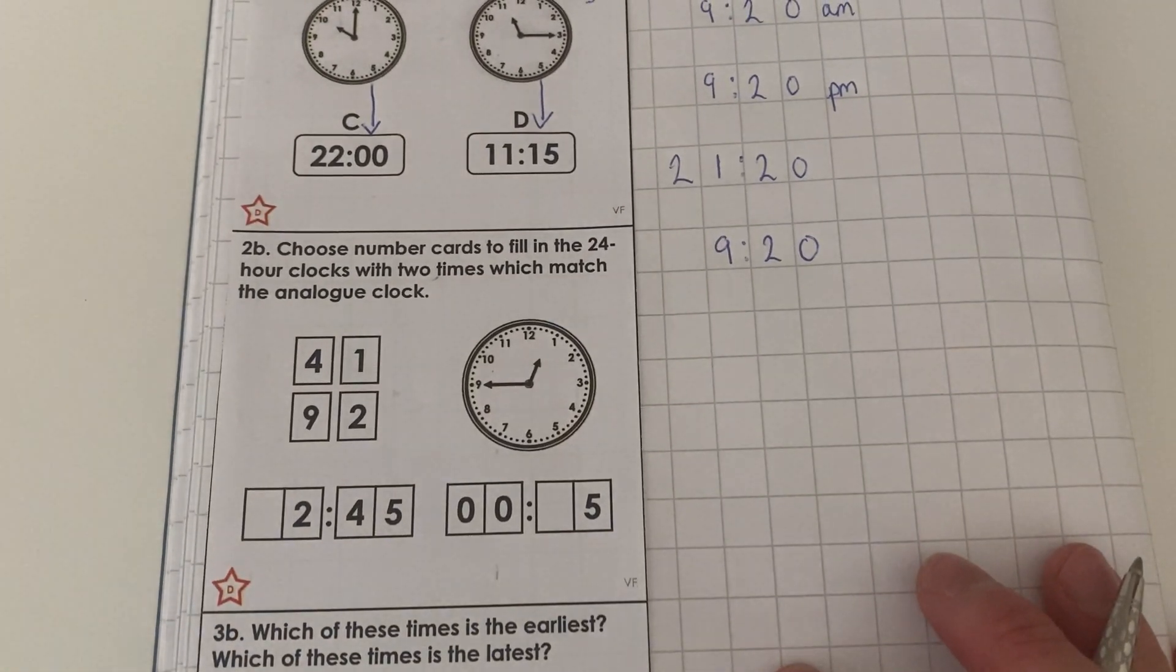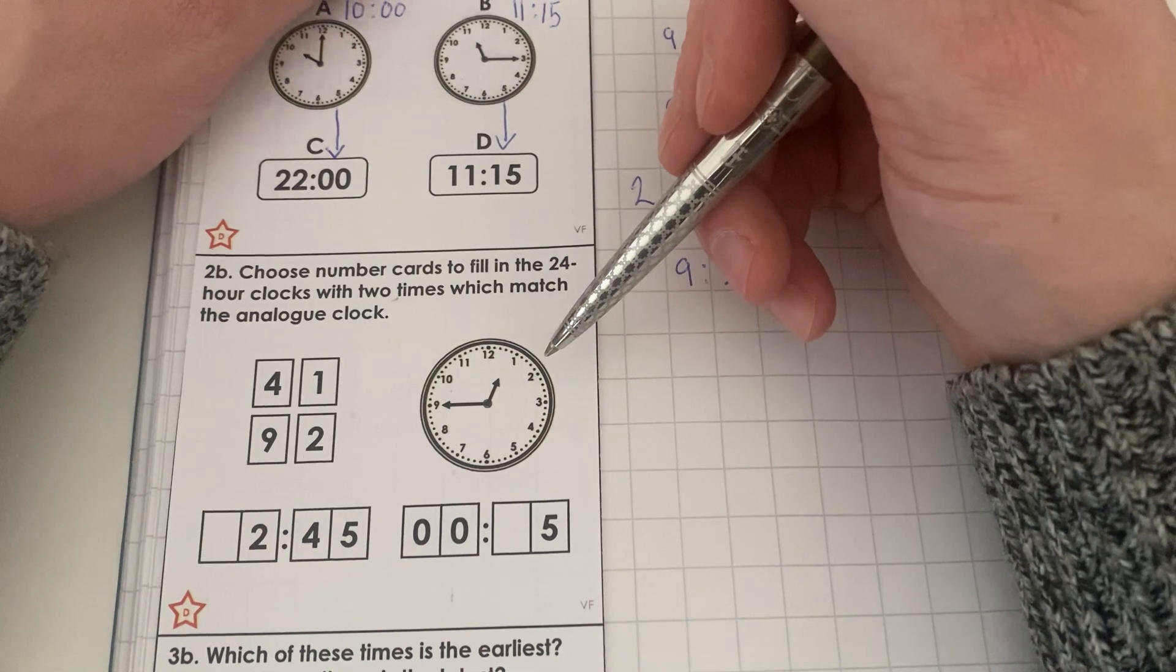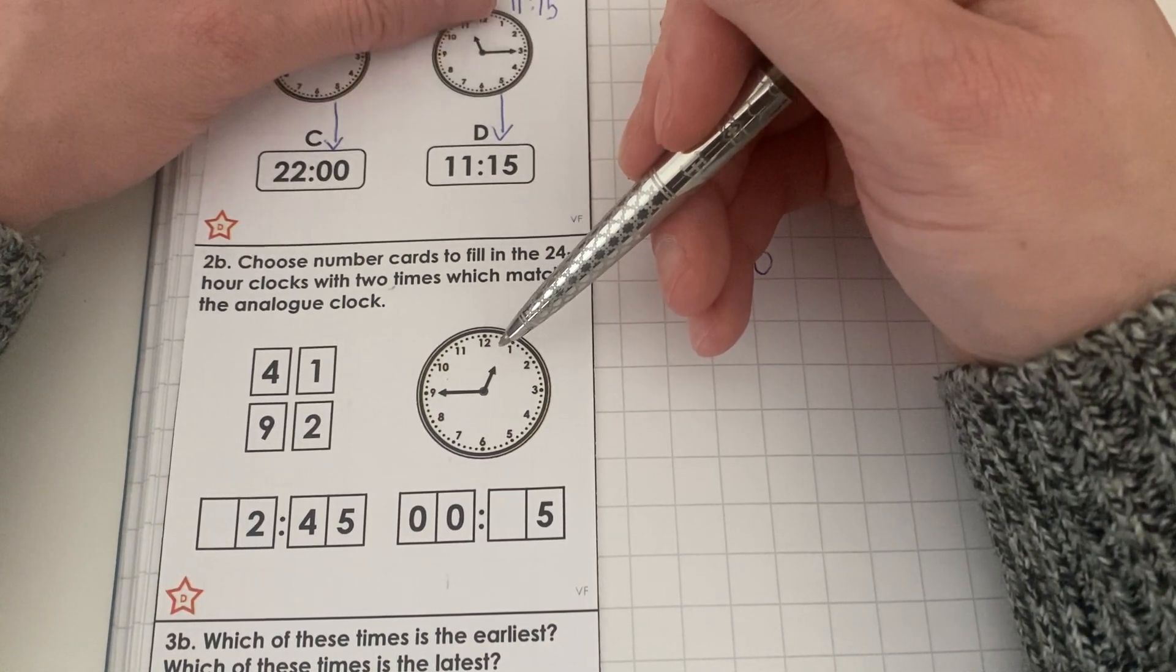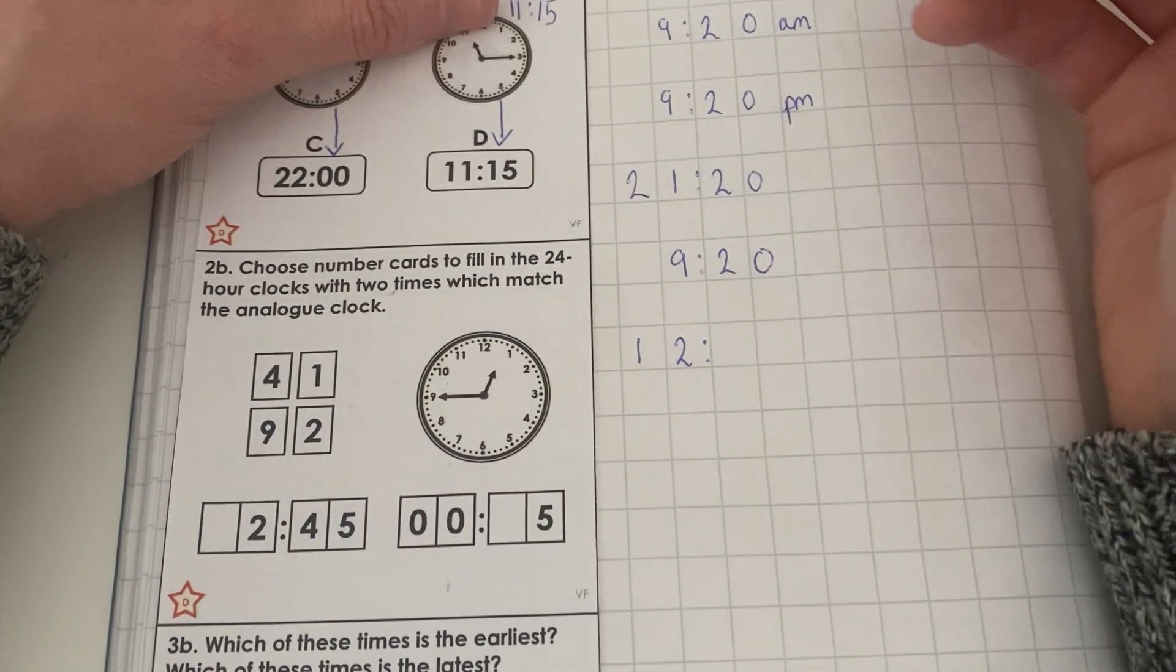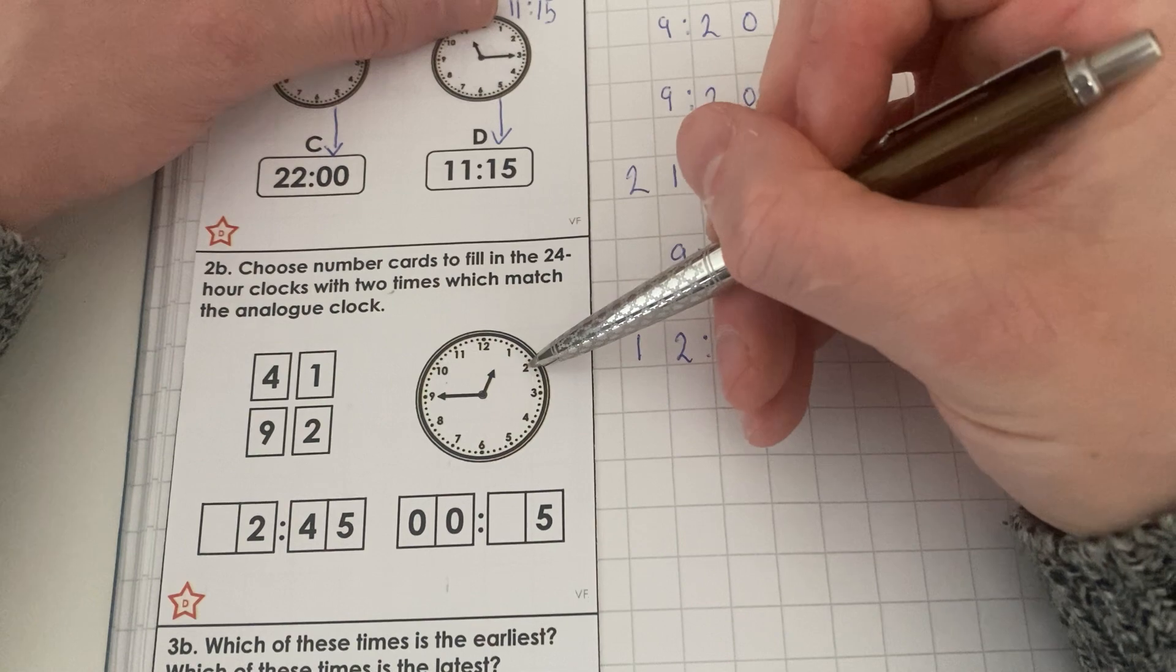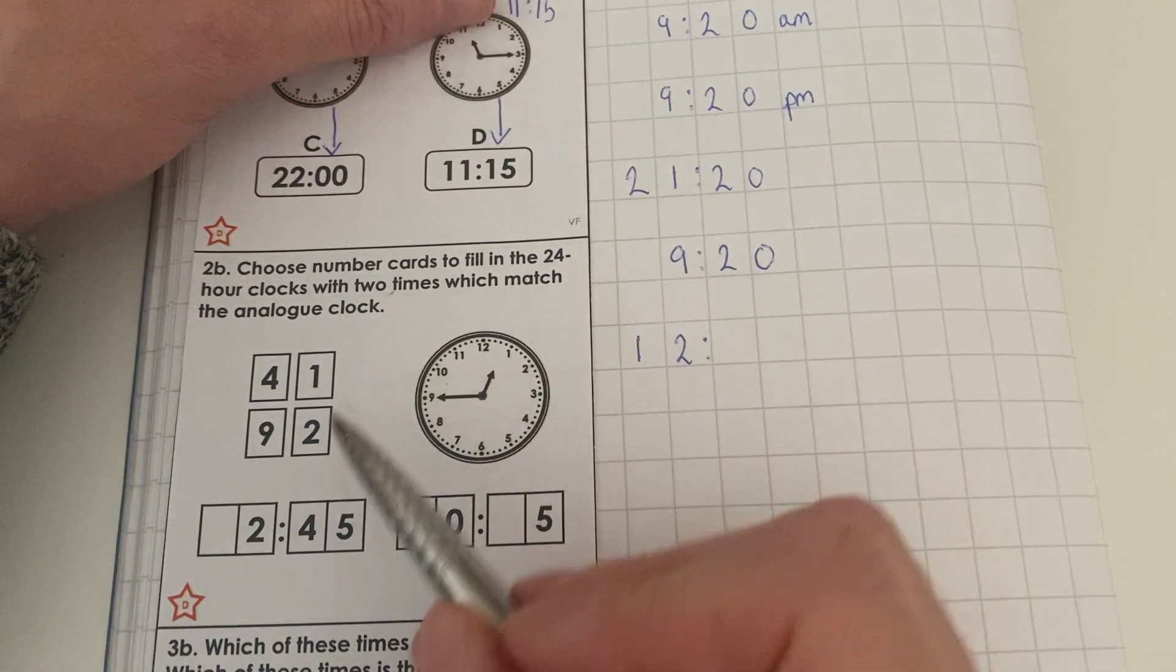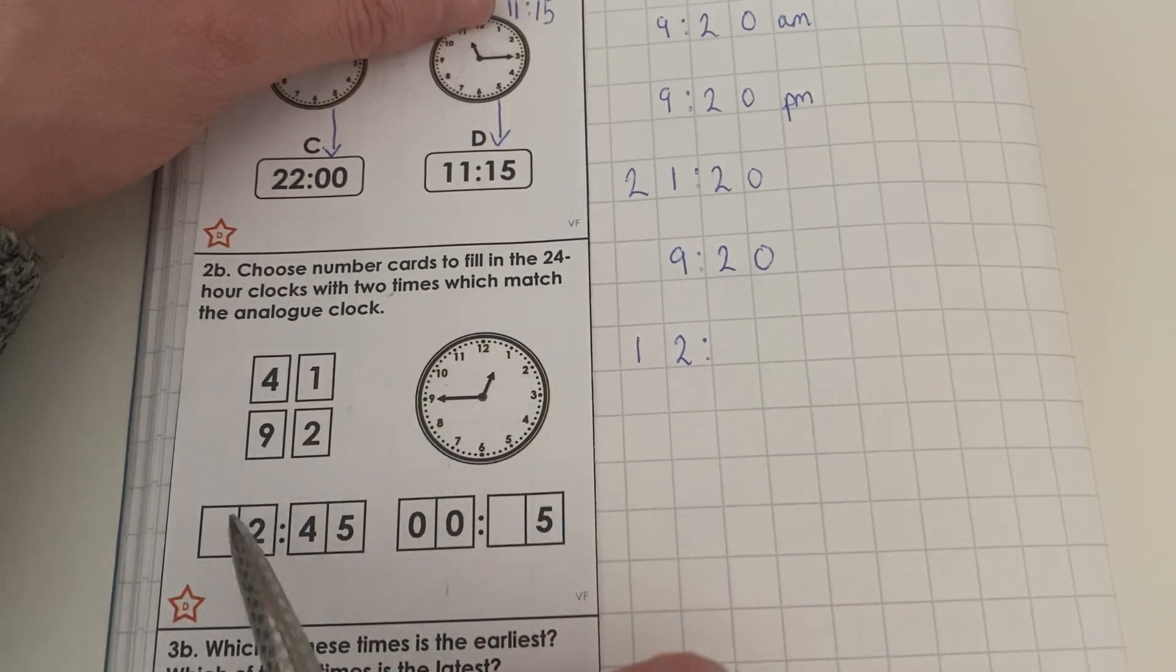Question 2B says, Choose number cards to fill in the 24 hour clocks with 2 times which match the analogue clock. So we have a look here. We've got 12. Our hour hand has just gone past 12. So we know that we can put straightaway that our 12 can go there. And then we can start counting our minutes. So 5, 10, 15, 20, 25, 30, 35, 40, 45. Our minute hand is pointing at 45.